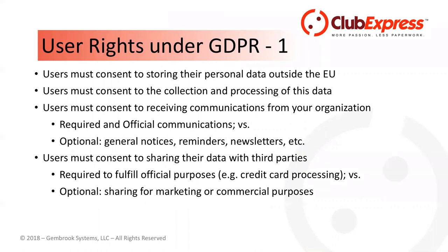Users also have to consent to receiving communications from your organization. There are two types: required official communications — like renewal notices, payment confirmations, and event registration confirmations — and optional communications like general notices, a monthly email from the president, or event reminders. This applies not only to members but also to non-members who register for an event, make a donation, or participate in a volunteering request. Club Express has always allowed members and non-members to opt out of optional communications.